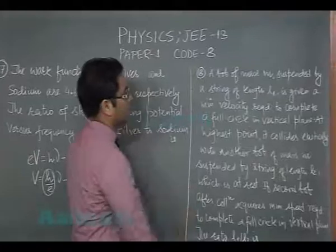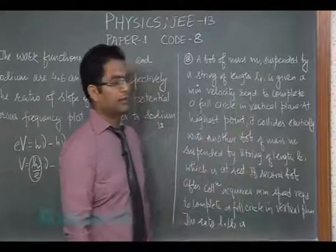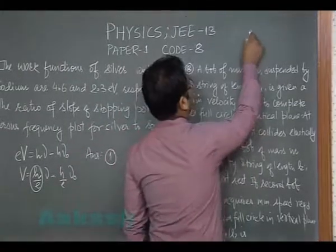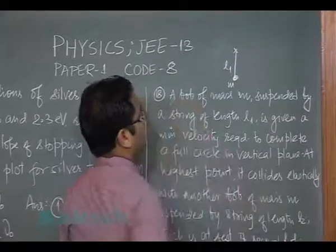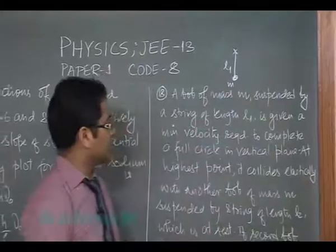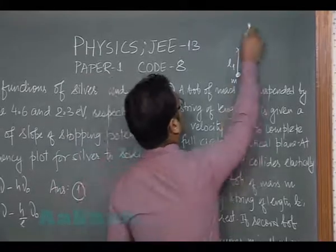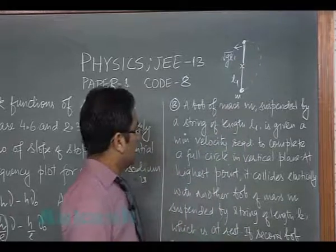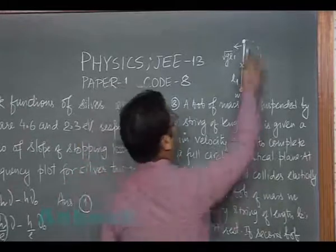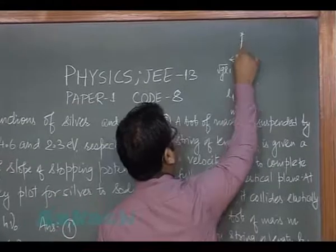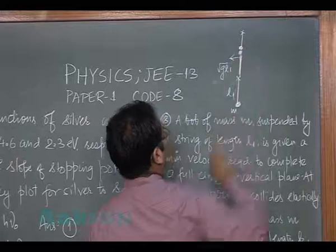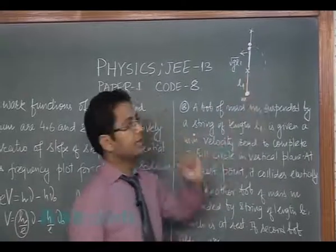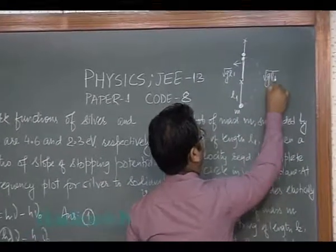Let's go to question number 18. A bob of mass m suspended by a string of length l₁ is given minimum velocity required to complete a full circle in vertical plane. Here is m, l₁, so it's given a velocity √(5gl₁). Quite obviously at the highest point, when it reaches the highest point, it will have a speed of √(gl₁). It collides elastically with another bob of mass m. So this has reached the highest point and there is another bob, this hits it, and the masses are same and the collision is elastic. That means velocity will mutually interchange.